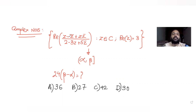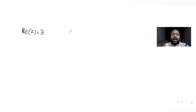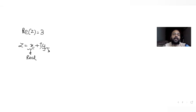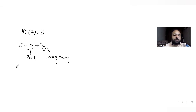Let's first solve this and get the values of alpha and beta. It's told to us that the real part of the complex number is equal to 3. We already know that a complex number is always denoted by x plus iy, where x is the real part and y (with i) is the imaginary part. Since the real part of z is 3, our complex number z becomes 3 plus iy.